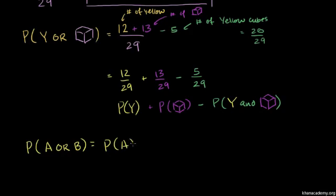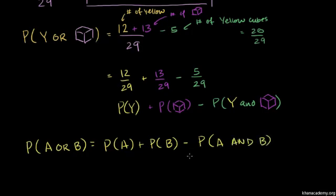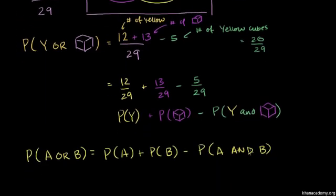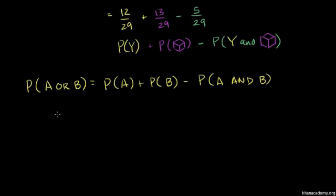The general rule: the probability of A or B equals probability of A plus probability of B minus probability of A and B. This result is very useful. A and B are double counted, which is why we subtract the intersection.